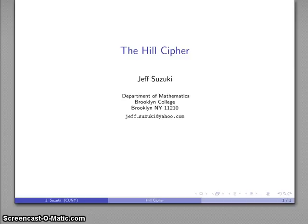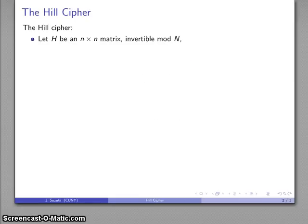Now, this was actually invented by Lester Hill, who was a faculty member at the City University of New York. He invented this in the 1930s, and the Hill Cipher works as follows.